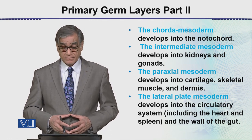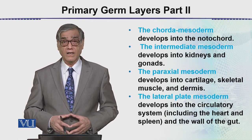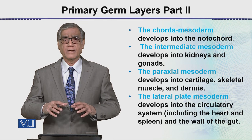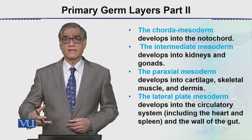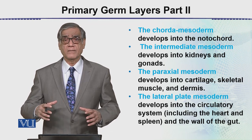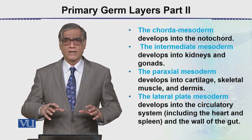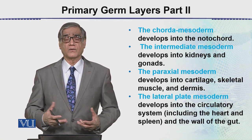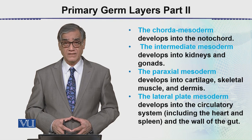The lateral plate mesoderm develops into the circulatory system, including the heart and the spleen, and the wall of the gut. You should be aware which organs of our body are derived from which of the three germ layers. This is all about the primary germ layers — that is the end of it.